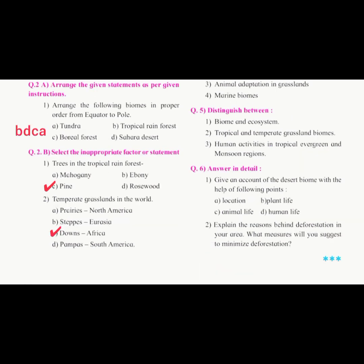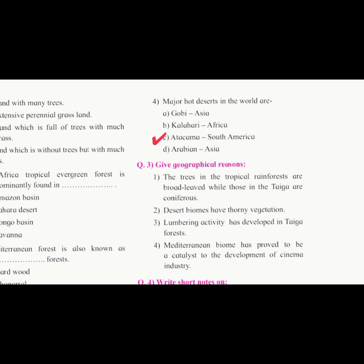Question 2A: arrange the given statements as per the given instructions. Answer: first tropical rainforest, then D Sahara Desert, then C boreal forest, and last one is A tundra. Question 2B: select the inappropriate factor or statement. The answer is C. Next, question 3 one: the answer is Atacama, South America.